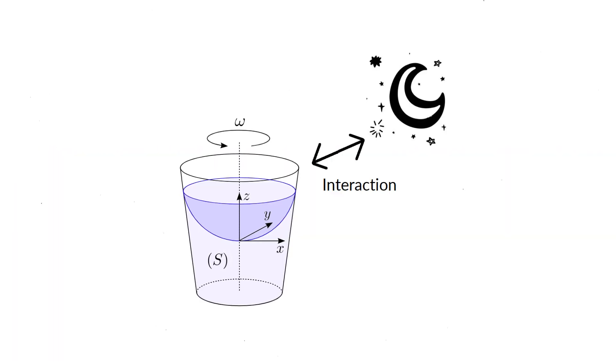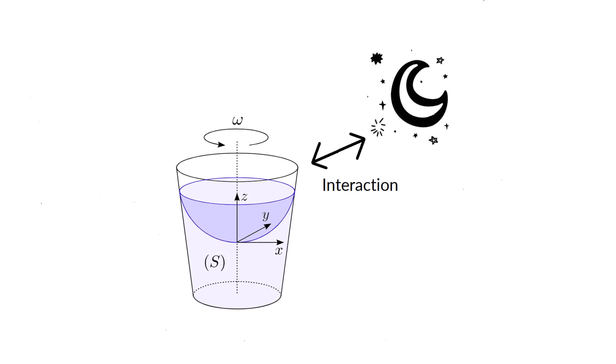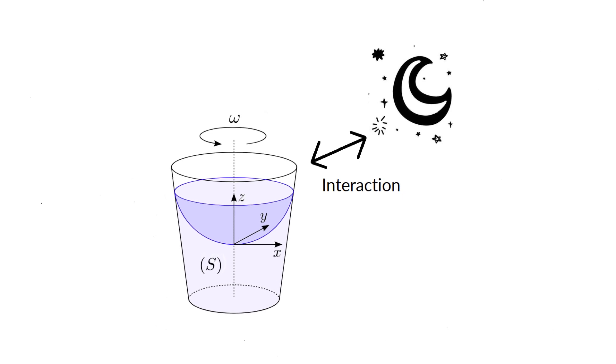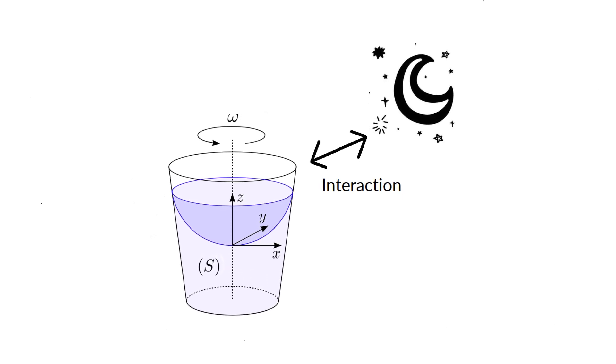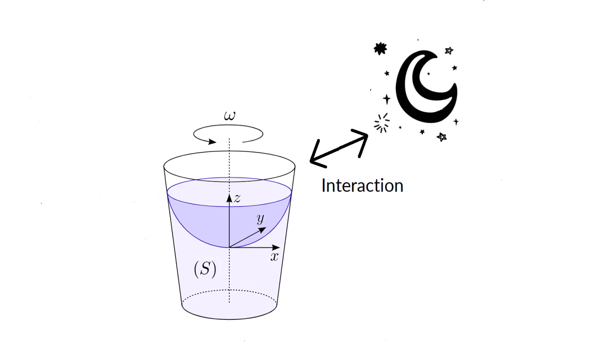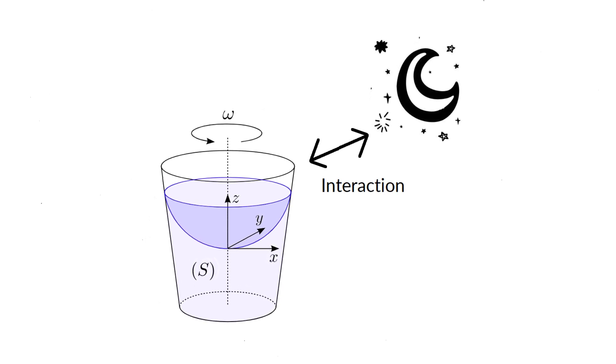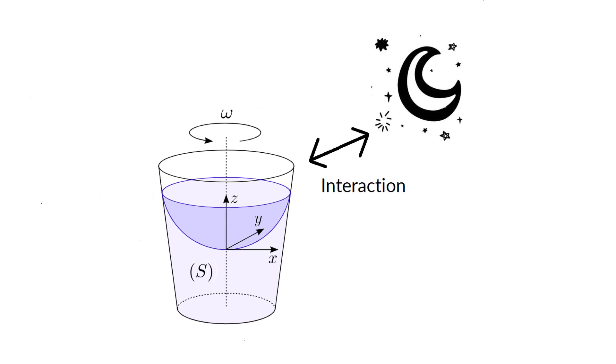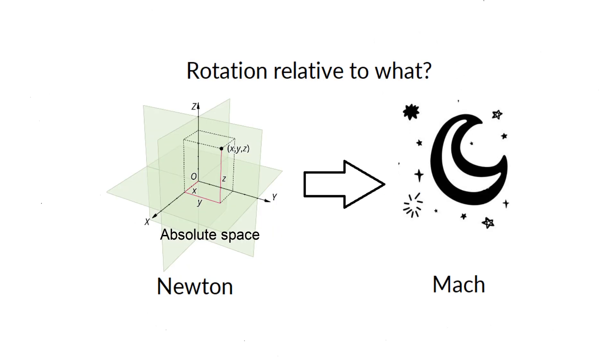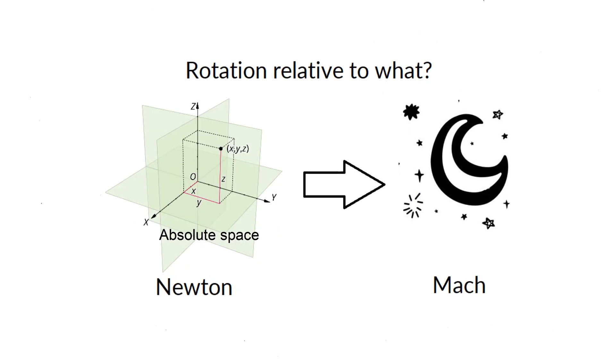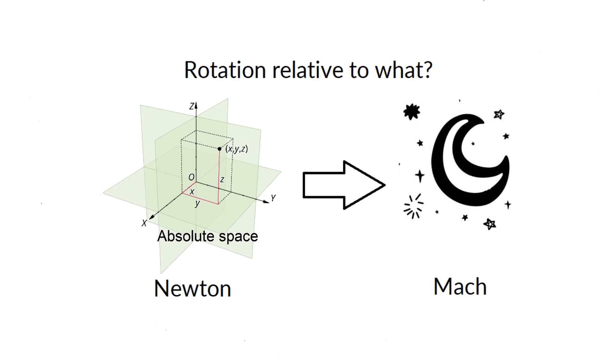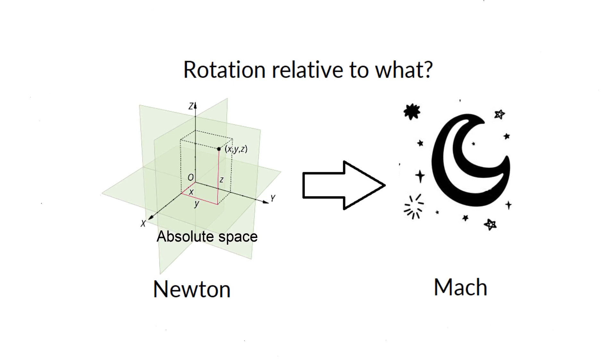According to Mach and known as Mach's principle, the inertia of a body is not an independent and intrinsic property of matter, unlike in Newtonian mechanics and general relativity, where a particle in an empty universe has inertial properties. Instead, inertia is the result of the action of the universe as a whole. Mach suggested that the fixed background distribution of matter in the universe must exert the inertial forces on a local accelerating body.